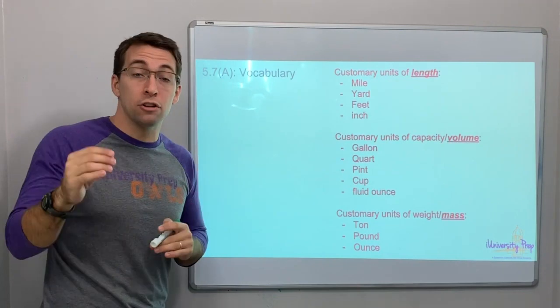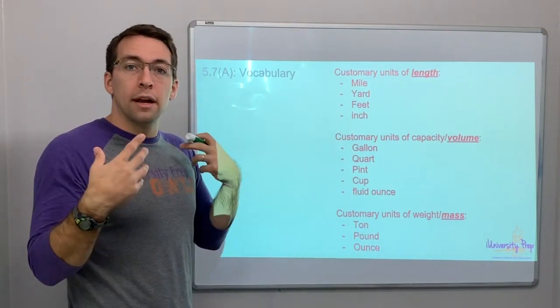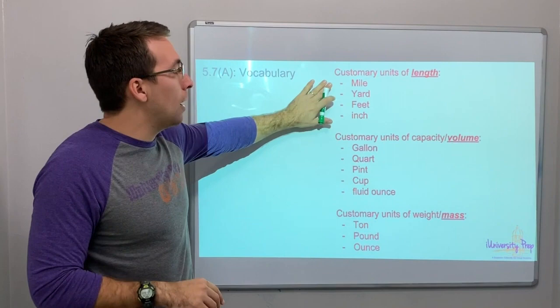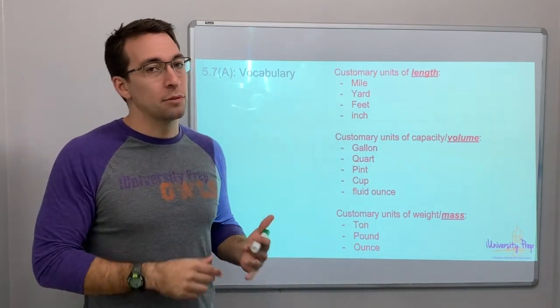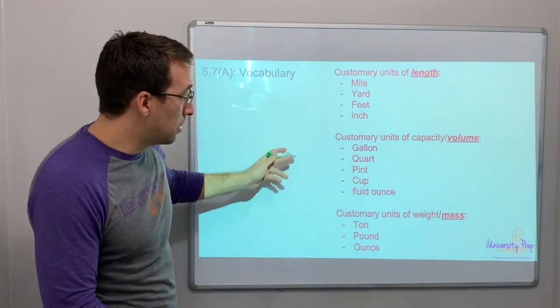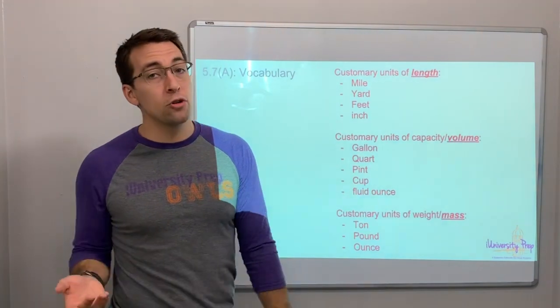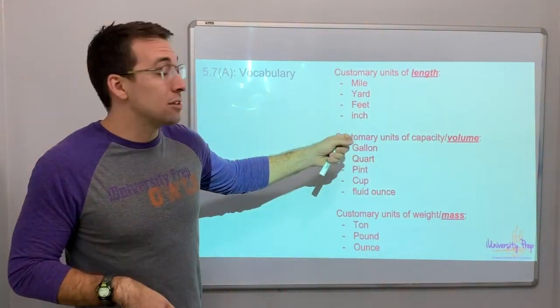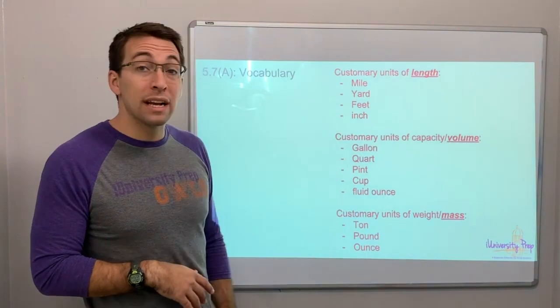And you're going to also have, on your star test, you'll have a conversion chart, like, you have formulas and charts that you can look at. But if you have that information memorized, it'll be that much easier. Customary units of volume. So this is in the United States. Gallons and quarts, pints, cups, fluid ounces.